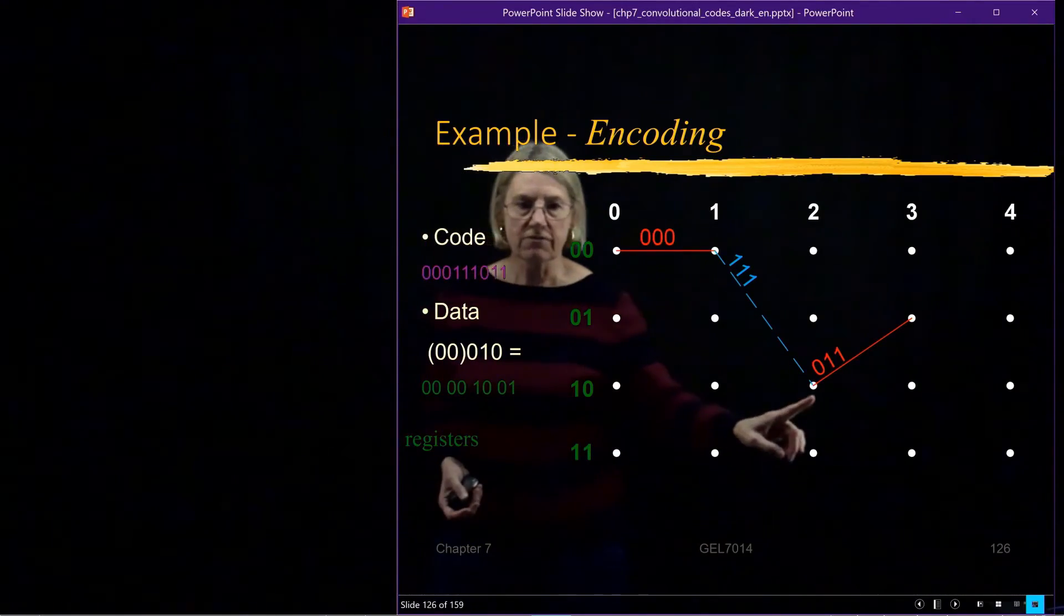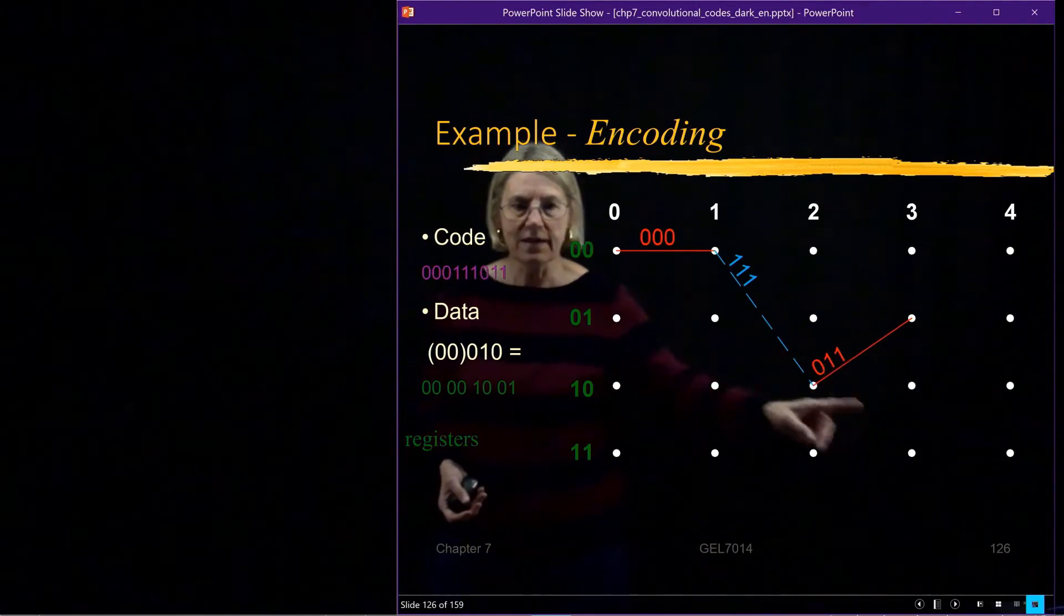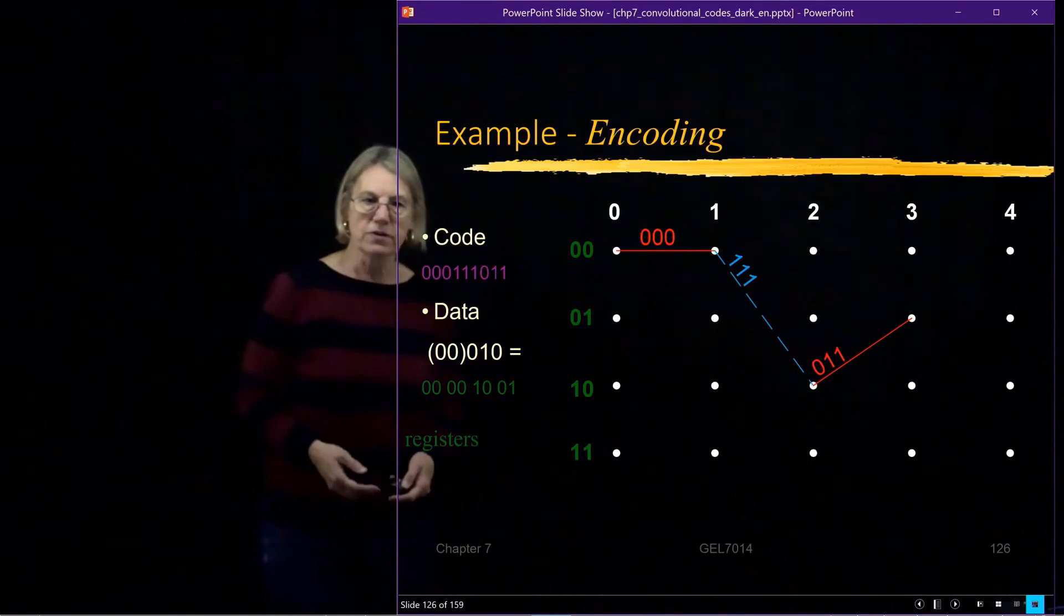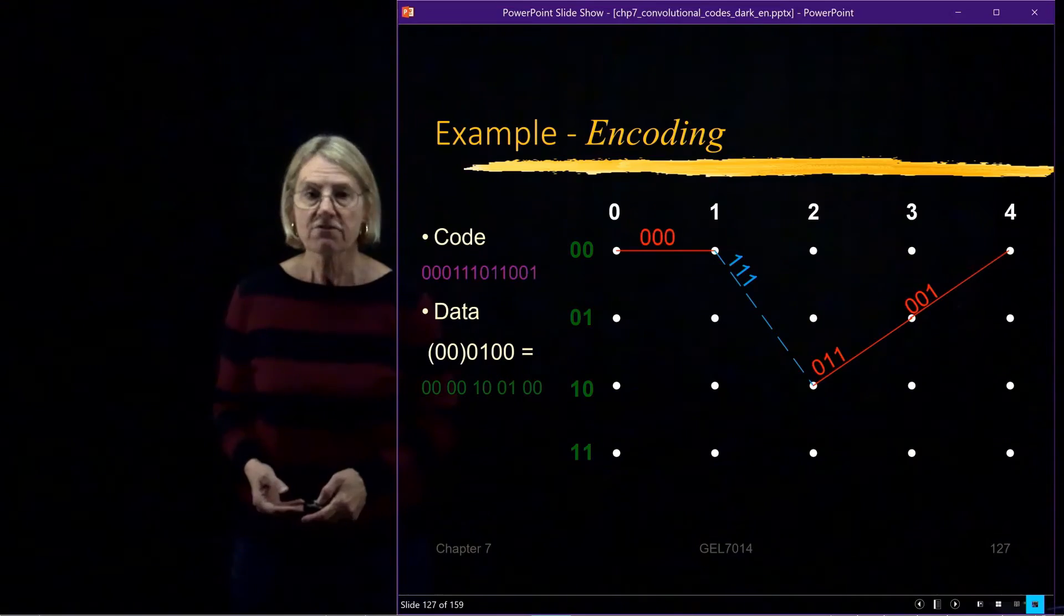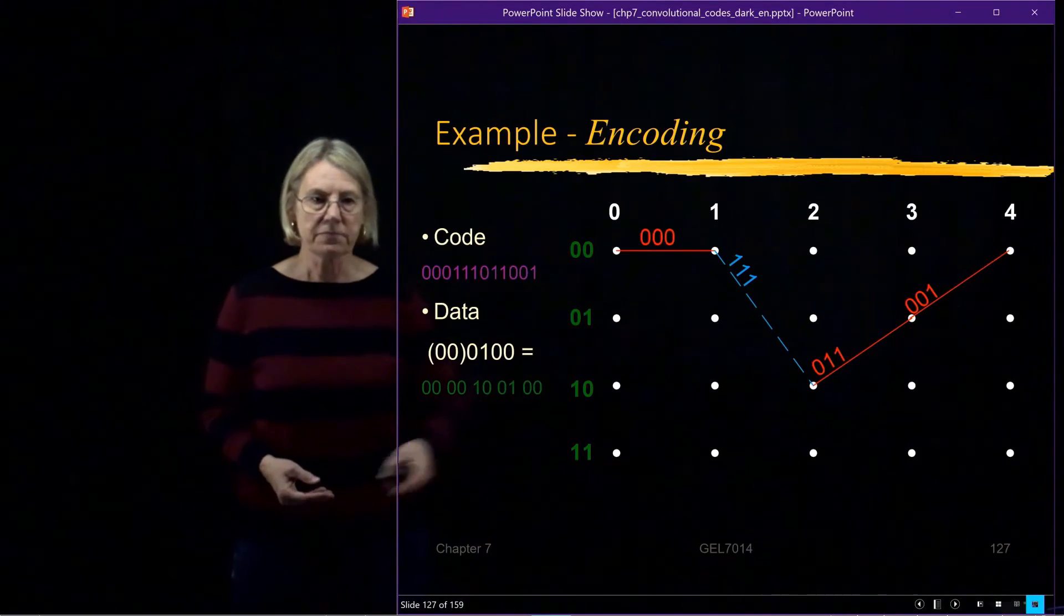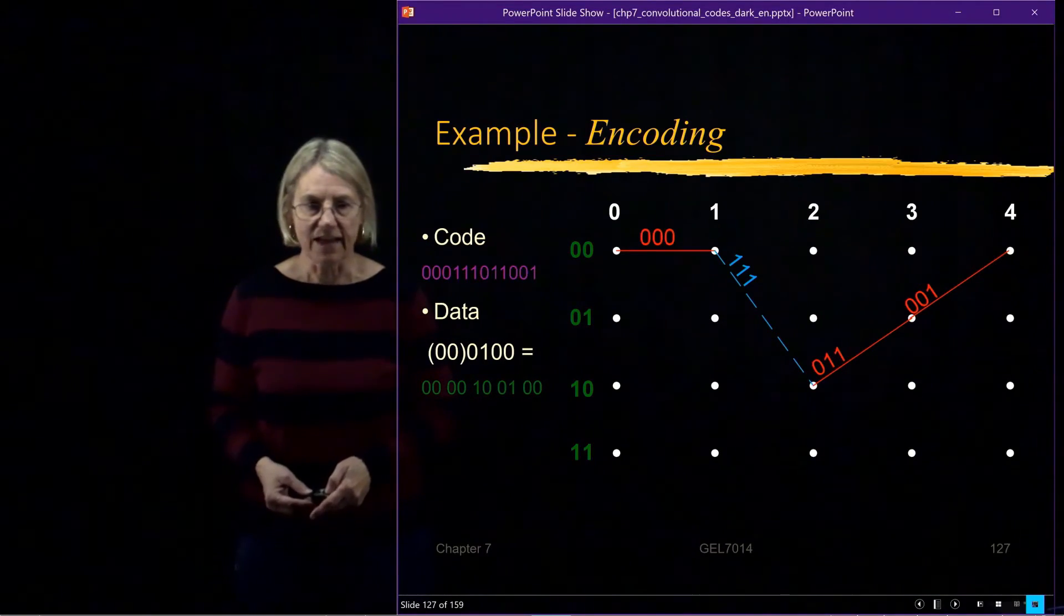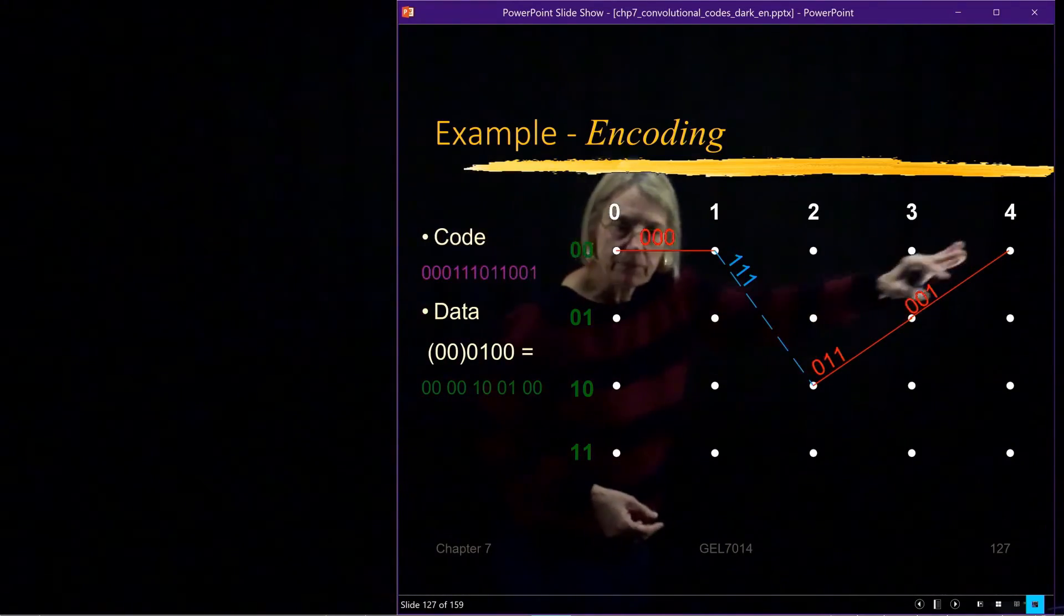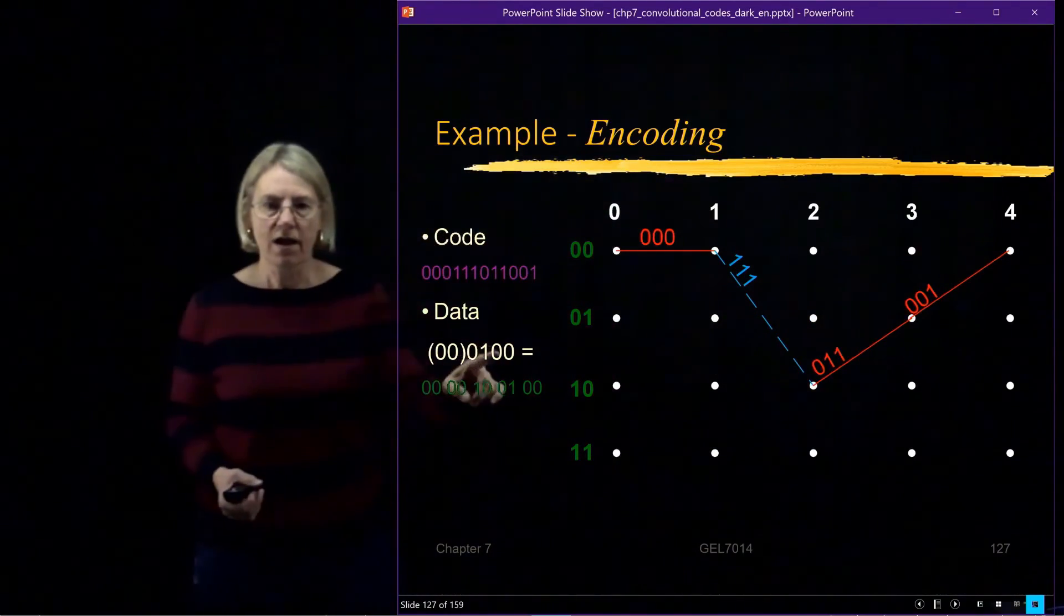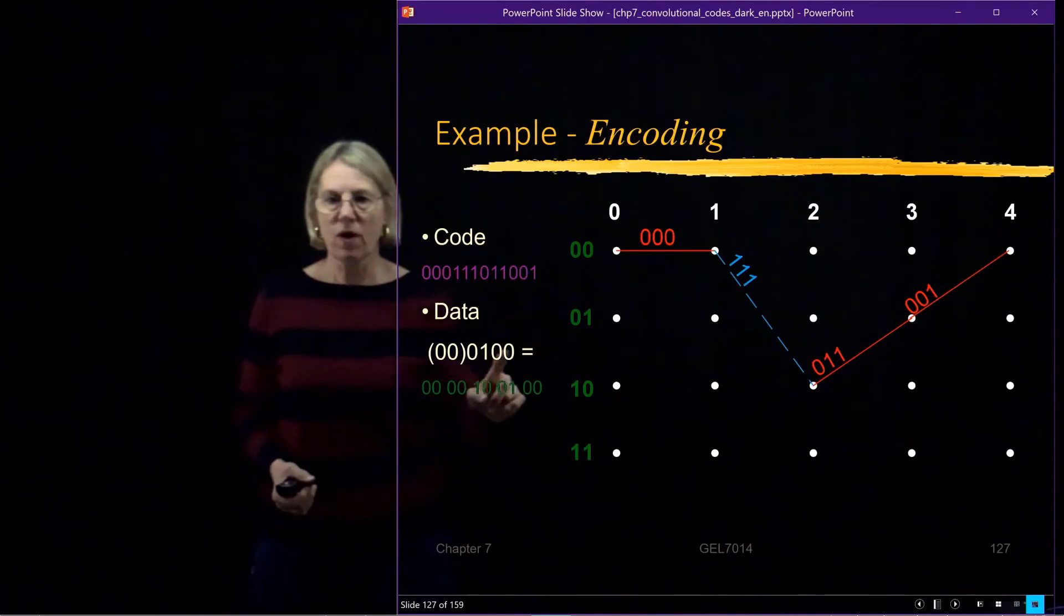And if I go up now, I have an input of a data of 0. Now I'm going to go from state C to state B. And the code word at the output is going to be 0 1 1. And finally, if I input another 0, I go up to state A again.